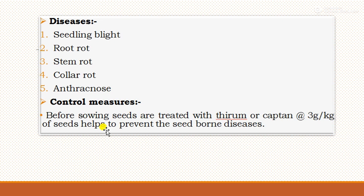For diseases, the major ones are seedling blight, root rot, stem rot, collar rot, and anthracnose. Jute diseases can be controlled with seed treatment using thiram or captan at the rate of 3 grams per kg of seeds to prevent seed-borne diseases. Also spray the crop with zineb, mancozeb, or agrimycin at the rate of 1 litre per 800 litres of water.